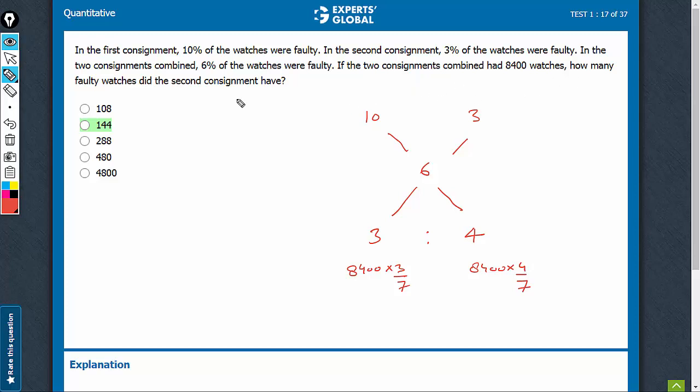The question is asking, how many faulty watches did the second consignment have? So 8400 × 4 ÷ 7 is the number of total watches. Remember, it's not the number of faulty watches.